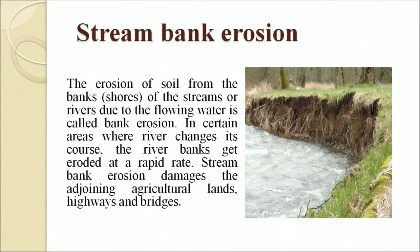Stream bank erosion is the erosion of soil from the banks of streams or rivers due to flowing water. In certain areas, when a river changes its course, the river banks get eroded at a rapid rate. Stream bank erosion damages adjoining agricultural land, highways and bridges.